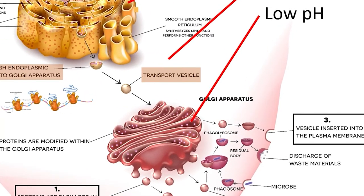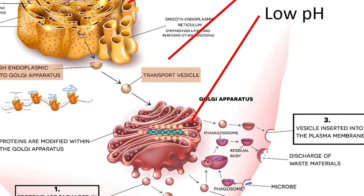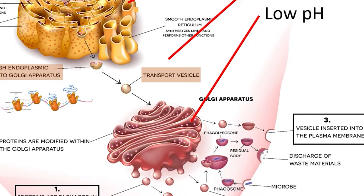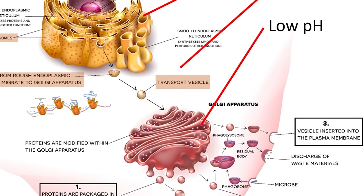The smooth ER has a variety of functions and is responsible for synthesizing phospholipids to replace what it loses to transport vesicles. The smooth ER also synthesizes a variety of other lipids, from fats to hormones, depending on the cell's type. For instance, cells that produce lipid-based sex hormones in animals are often loaded with smooth endoplasmic reticulum because they are responsible for producing all of the sex hormones the organism needs to successfully reproduce.